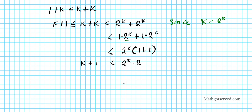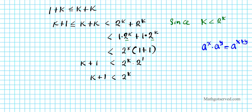Now let's use properties of exponents. We can express 2 as 2 to the first power, so k plus 1 is less than 2 to the k times 2 to the 1. When multiplying two exponents with the same base, the product of powers property tells us to add the exponents. So 2 to the k times 2 to the 1 equals 2 to the k plus 1. Therefore k plus 1 is less than 2 to the k plus 1.